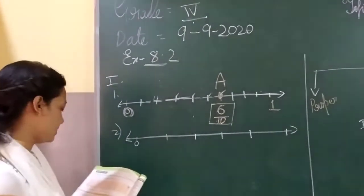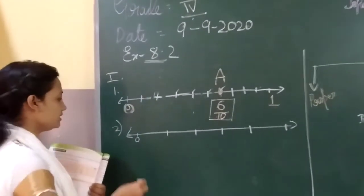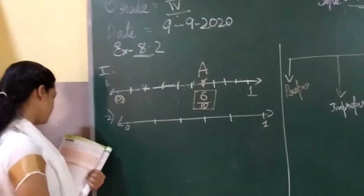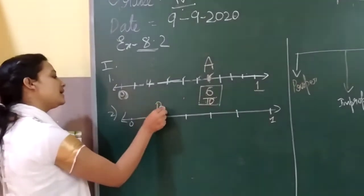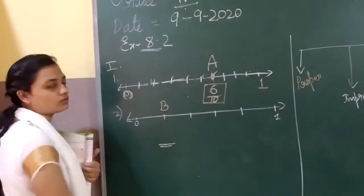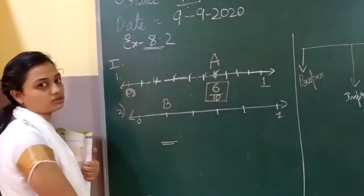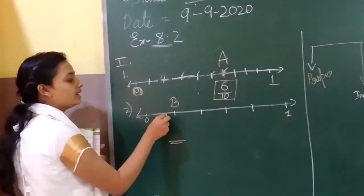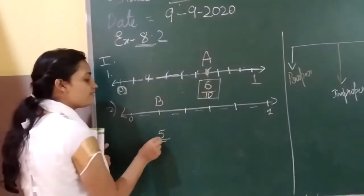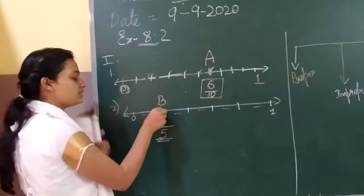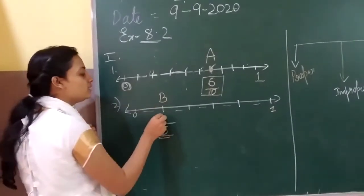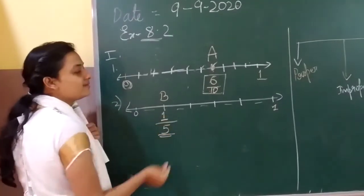Now let us see the second one. We have taken from 0 to 1, and they have given the letter B. So what is the fraction here? First let me count how many parts the line has: 1, 2, 3, 4, 5. So I have 5 parts. And this is the first part. So I will write 1 by 5.